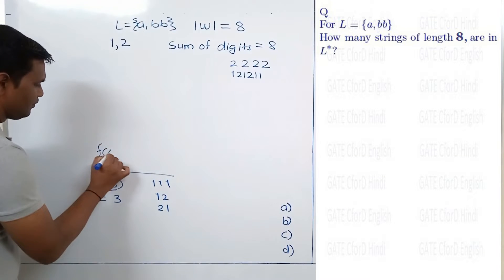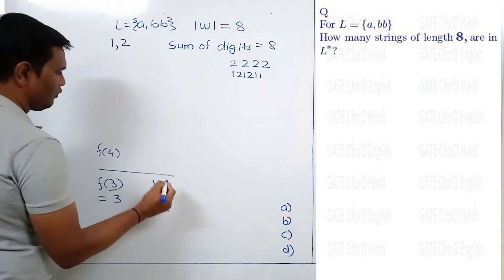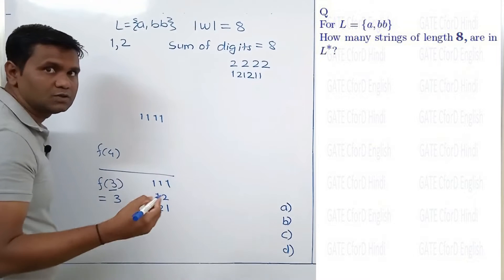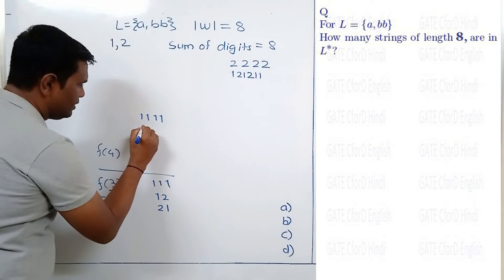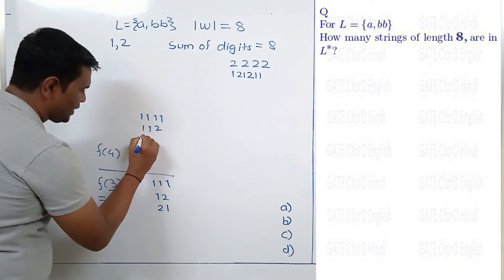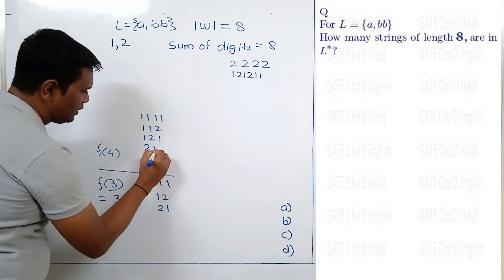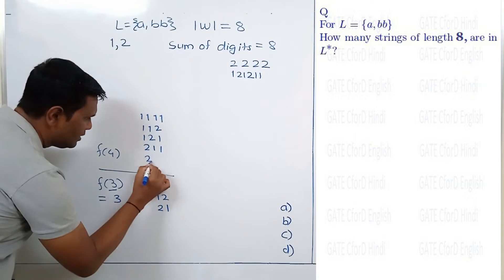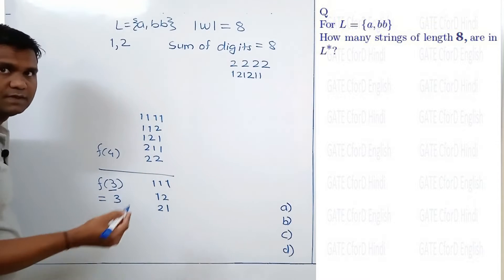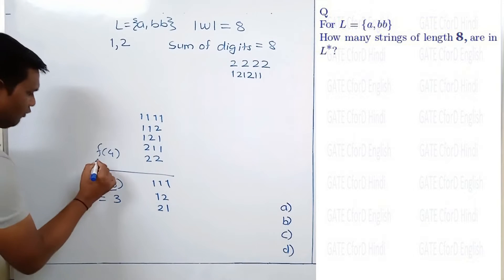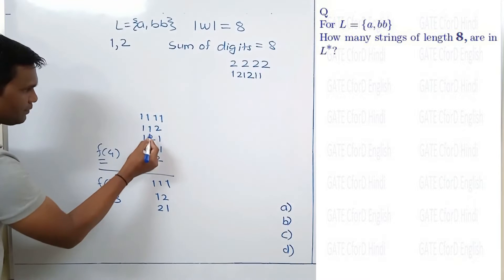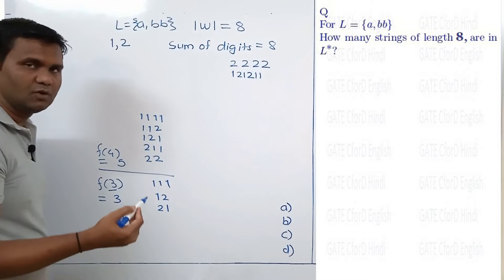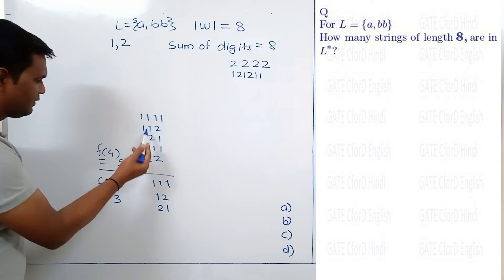Now let's see f(4). In f(4) we have: 1111 with zero occurrences of digit 2; then 112, 121, and 211 each with one occurrence of digit 2; and then 22 with two occurrences of digit 2. So f(4) = 5. There are 5 numbers which contain only digits 1 and 2 and have a sum of digits equal to 4.